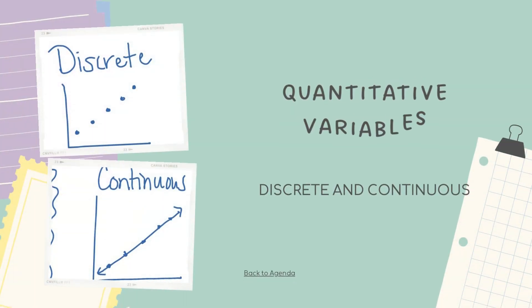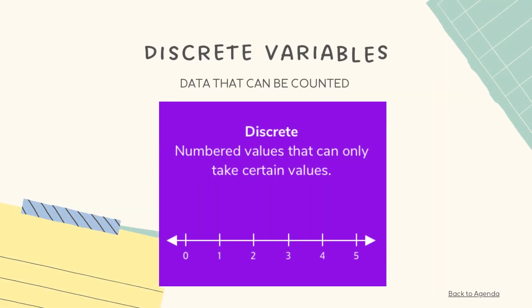Let's move on to the quantitative variables classified as. Quantitative variables are classified as two: discrete and continuous. Let's start with the discrete variables. Discrete variables data that can be counted. A discrete quantitative variable is one that can only take specific numeric values rather than any value in an interval, but those numeric values have a clear quantitative interpretation.